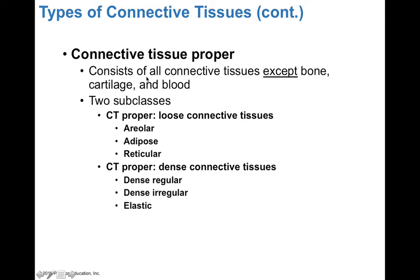Connective tissue proper is formed by fibroblasts, and it consists of all connective tissues except for bone, cartilage, and blood, so CT proper is pretty abundant. There are two major subclasses: CT proper loose and CT proper dense. The loose connective tissues include areolar, adipose, and reticular, and the dense connective tissues are dense regular, irregular, and elastic. We're going to go through each subtype, talking about their structure, function, and location in the body.